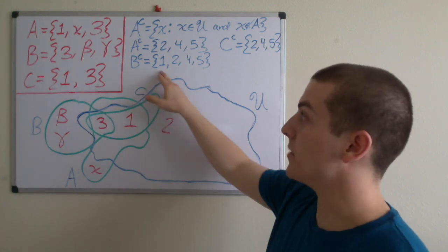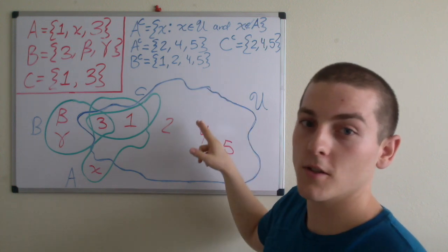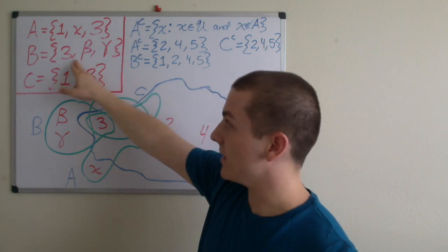Next we have B complement. Well we know that one, two, four, and five are within the universe and they're not within B.